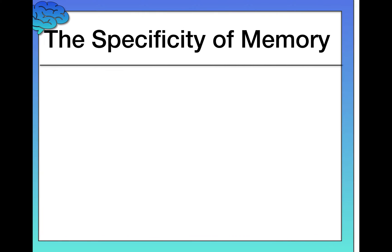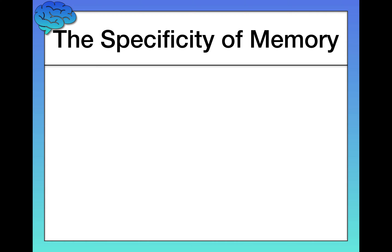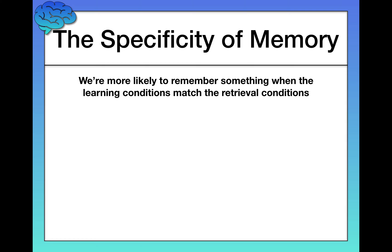Now let's shift gears and talk about the specificity of memory — our segue into how we can use psychology to enhance learning. The principle is that we're more likely to remember something when the learning conditions match the retrieval conditions. There are two main types that illustrate this: context-dependent learning and state-dependent learning.